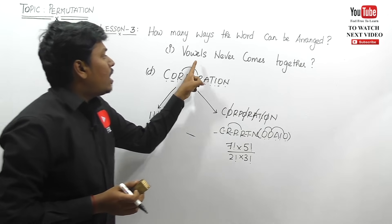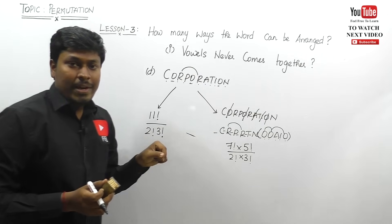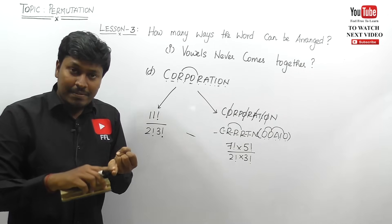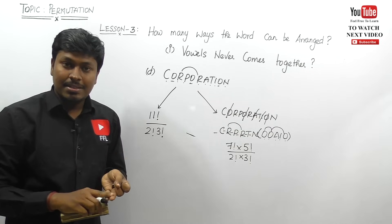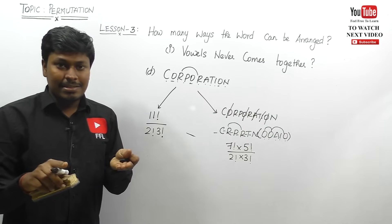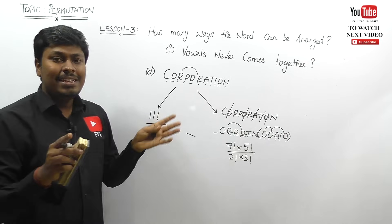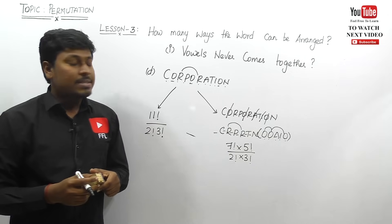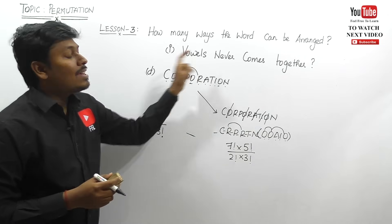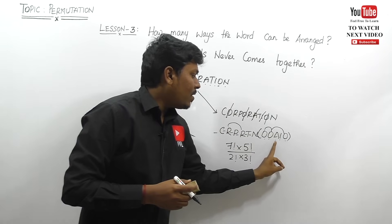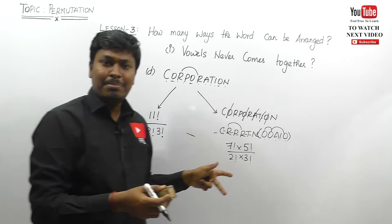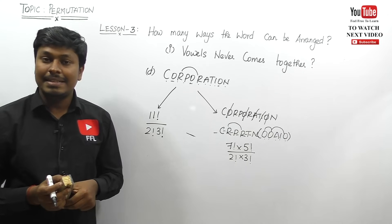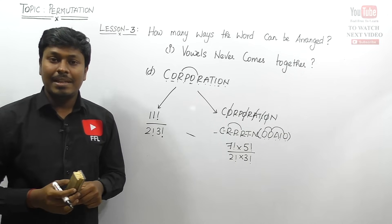Similarly, if they ask about consonants never coming together, you know the logic. According to lesson one you know how to find total arrangements, and you know how to find consonants-come-together arrangements. So if they ask consonants never come together, place the consonants inside the bracket on the right-hand side and apply the same logic. You can easily get the answer for lesson three. Let me move on to lesson four.